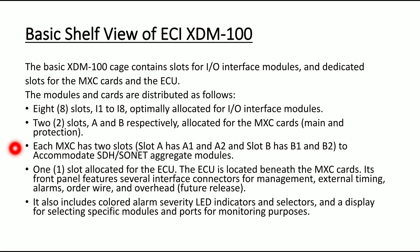Each MXC has two slots: slot A has A1 and A2, and slot B has B1 and B2, to accommodate SDH/SONET aggregate modules. One slot is allocated for the ECU.